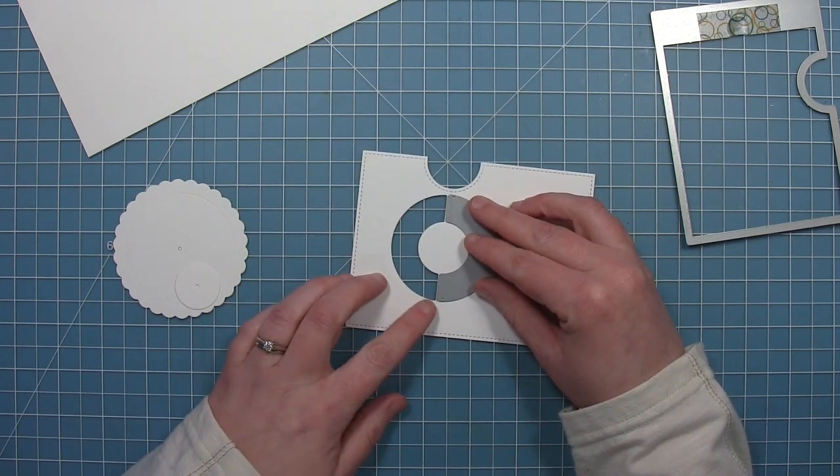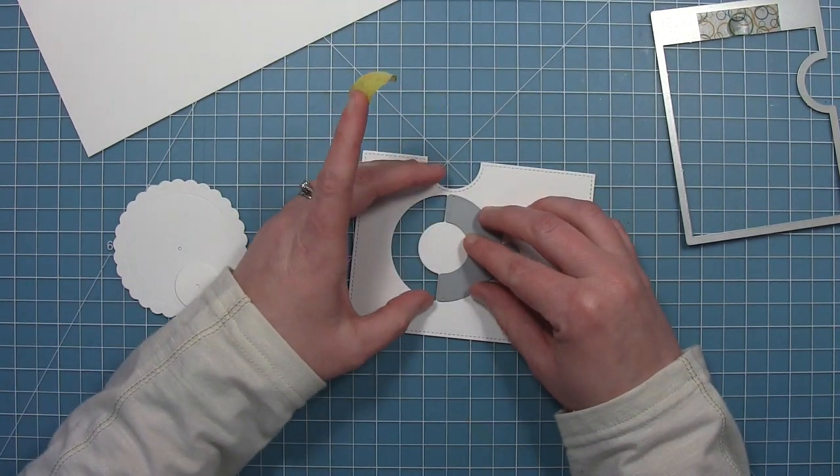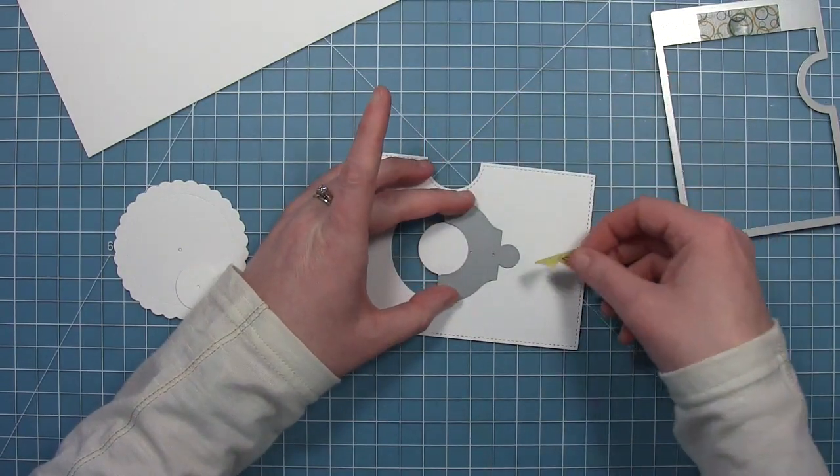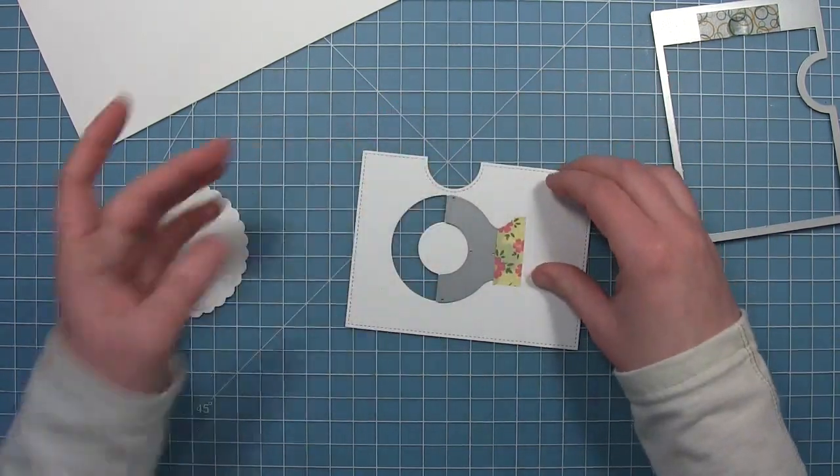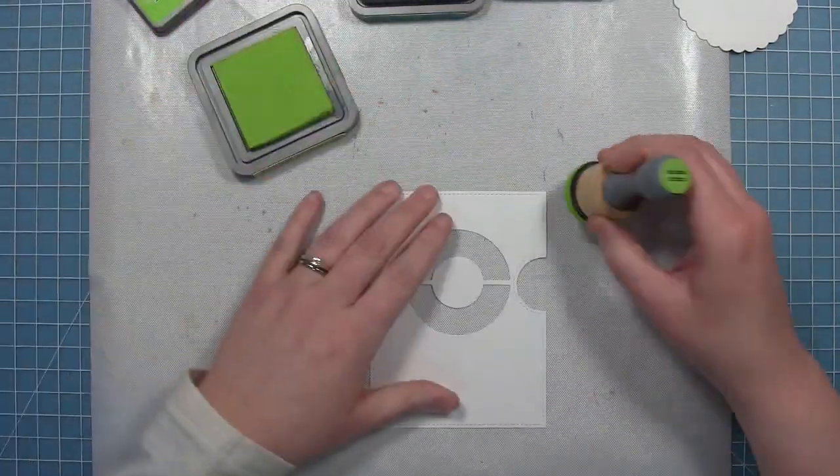Once I have that cut, I can take off the semi-circle puzzle piece and just line up those two edges with the die cut area from before. This will allow me to cut another semi-circle right below it, so you can see I have a full circle here.